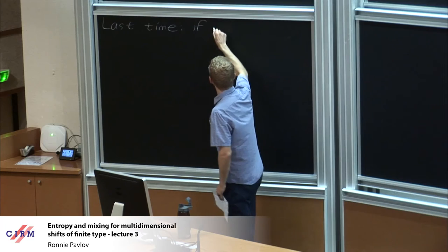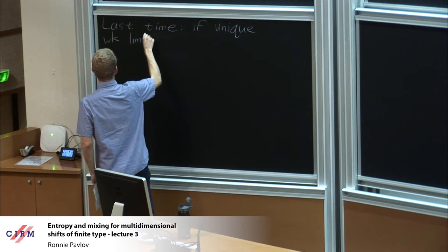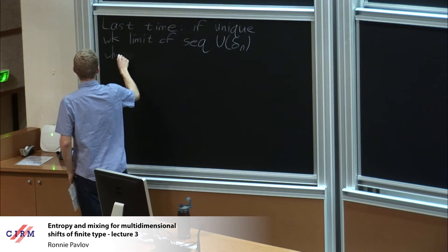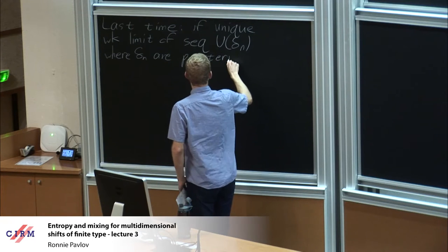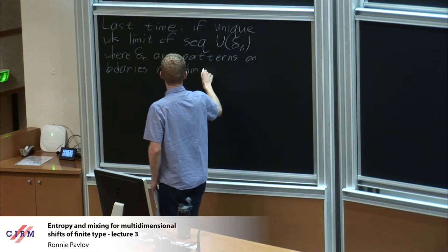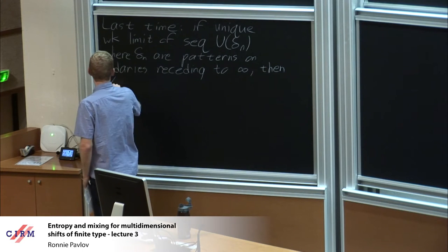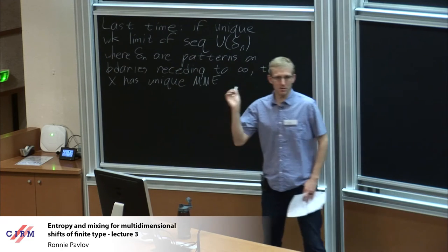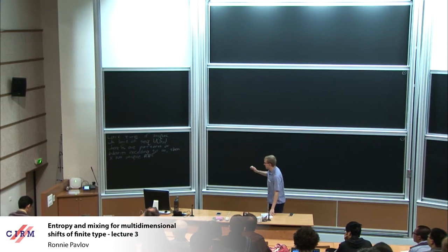Last time we said if there's a unique weak limit of a sequence u of delta n, where delta n are patterns on boundaries, and if there are boundaries receding to infinity, then x has a unique MME. I promise we basically proved this last time. If you don't remember, that's okay — just trust that the fact is true. The main thing is I want to make sure we agree on what the fact actually means here.